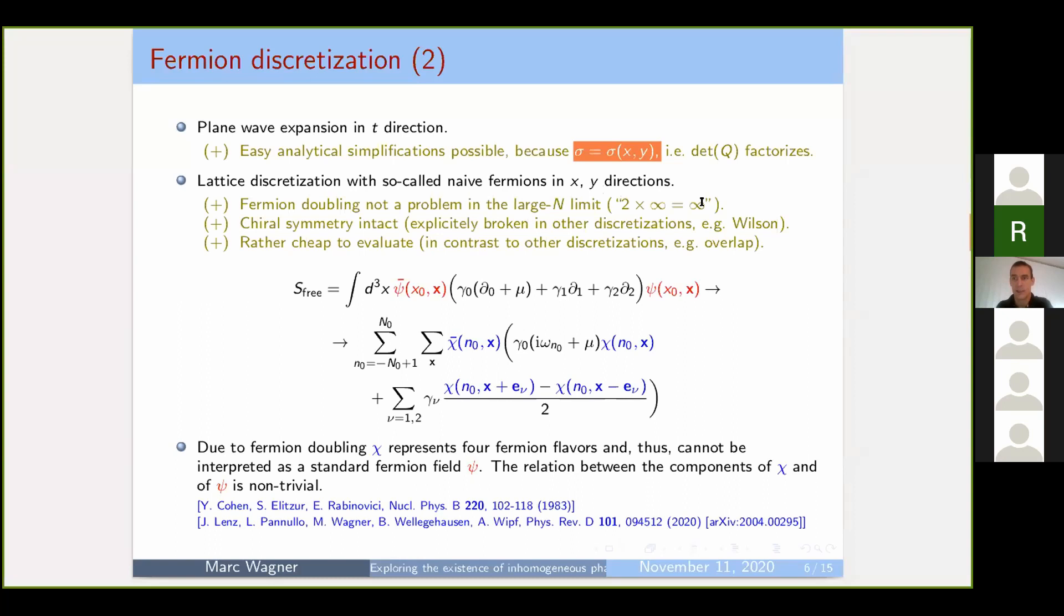The advantages of naive fermions is that chiral symmetry is intact. This is not always the case. For example, Wilson fermions are common but they break chiral symmetry. They're also cheap to evaluate, at least in comparison to typical chiral formulations of lattice fermions like overlap. One further technical remark, more intended to the lattice people here.